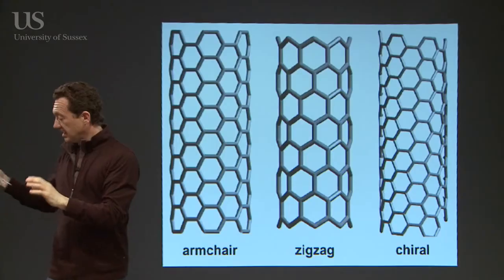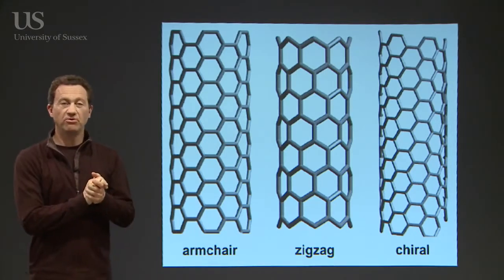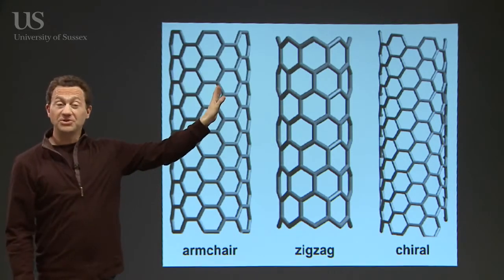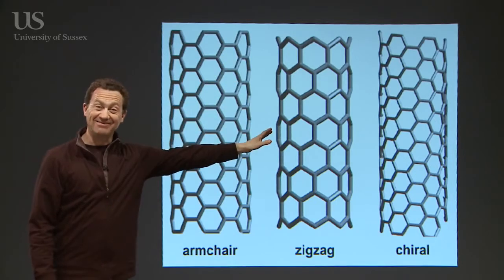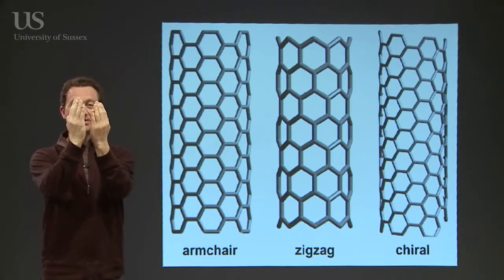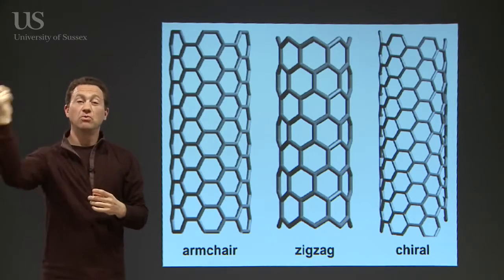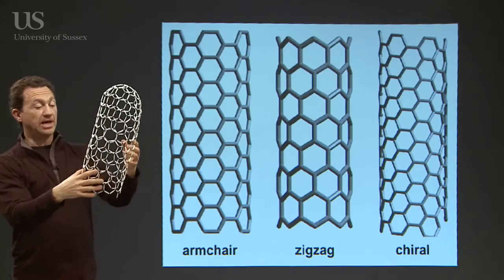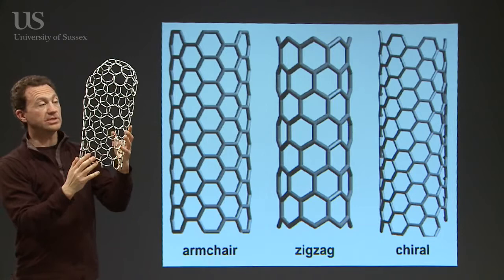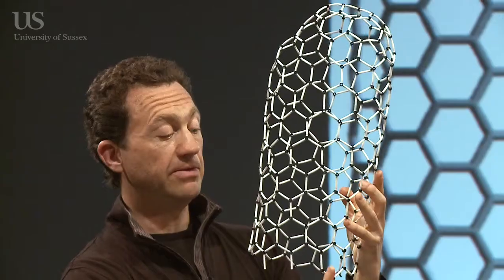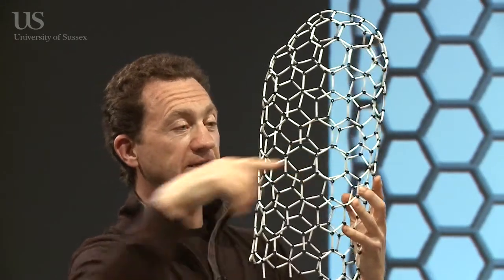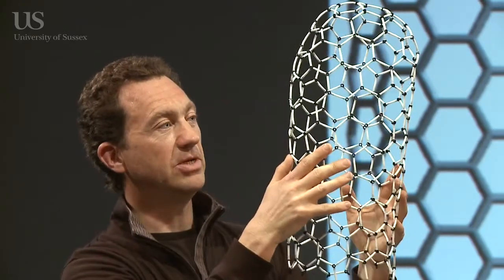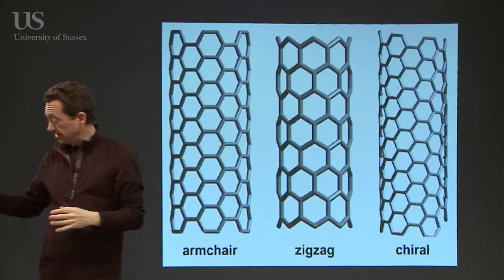So there are three different types of nanotube that can be formed, depending on the way you curve the hexagons or how they grow: the armchair nanotube, the zigzag nanotube, and one where the two sheets meet at a slight angle — that produces what's called a spiral or chiral nanotube. This is a spiral nanotube. If you look at it on the close-up, the hexagons are not going straight up and not at right angles — they're spiralling around the nanotube.